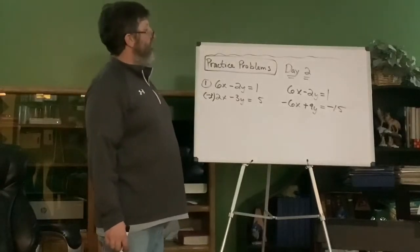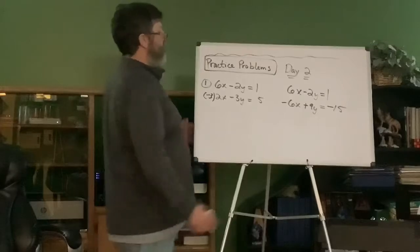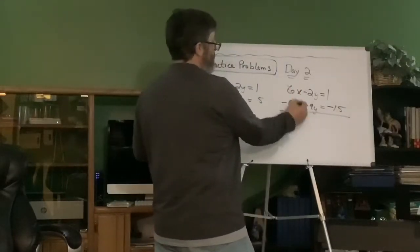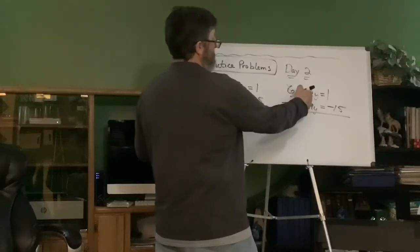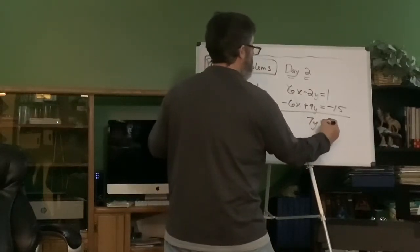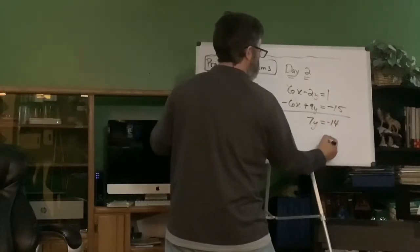All right, so, now, it should go pretty easy from here. Those guys eliminate. Nice. Negative two y plus nine y, it's a positive seven y equals negative 14. Y equals negative two.